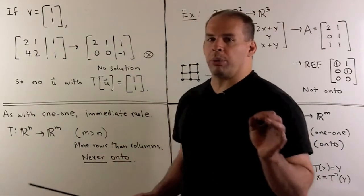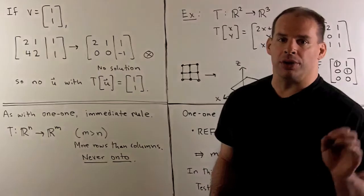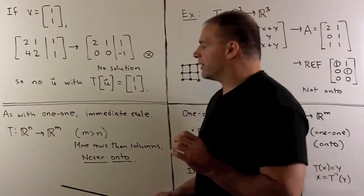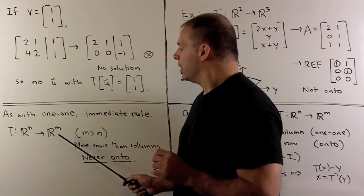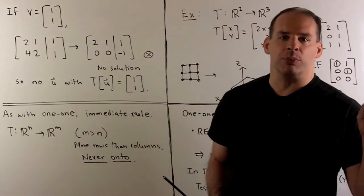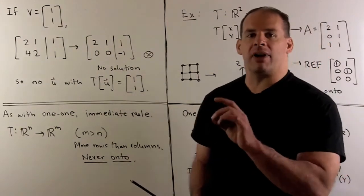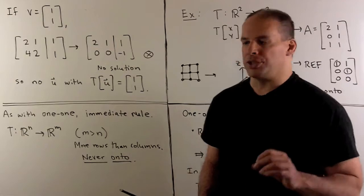Now, as with the one-to-one property, we have an immediate rule for when T is not onto. So if I have a linear transformation from Rn to Rm, M greater than N, that means our A matrix has more rows than columns. Its row echelon form can never have a pivot in each row, so it's never onto.